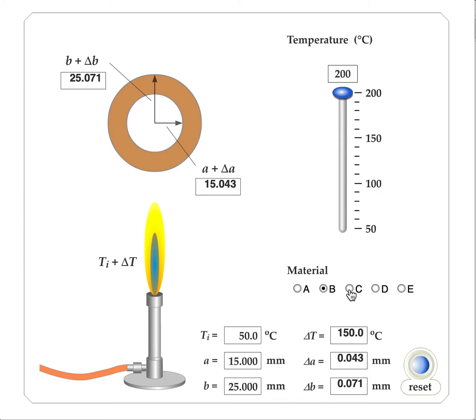We can repeat this for material C, D, and E. And if I go ahead and just hit material C, it automatically tells me how the material changed. So in all of these examples, they're starting with the same radius, inner radius and outer radius, same initial temperature.